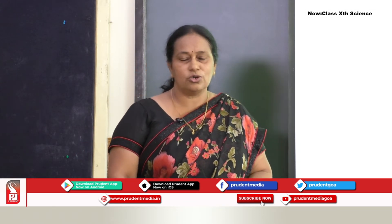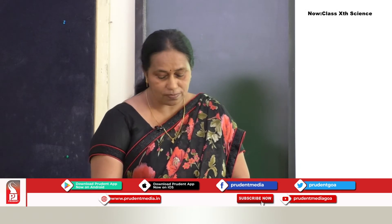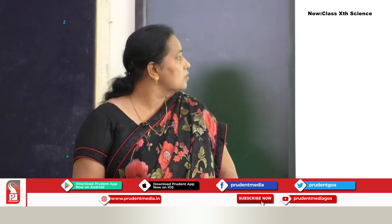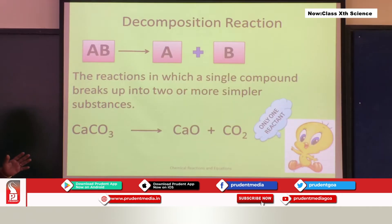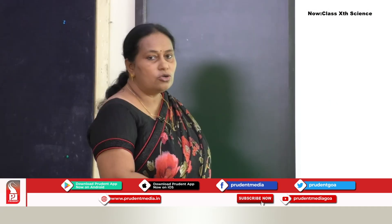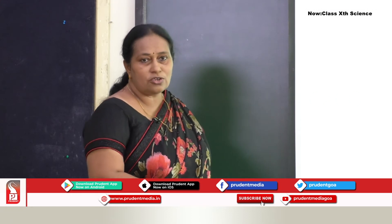Let us move on to the second type — decomposition reaction. What is the meaning of decompose? Break apart. Consider the reactant AB, a compound. It decomposes to give products A plus B — there are two products. But the reactant is just single. Don't you feel it is opposite to the combination reaction?